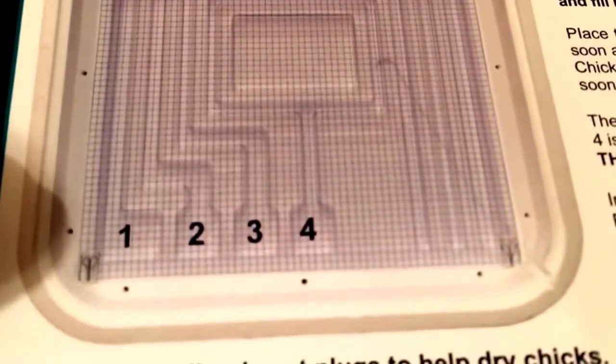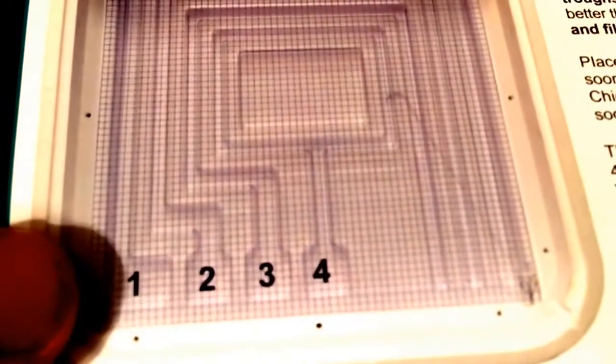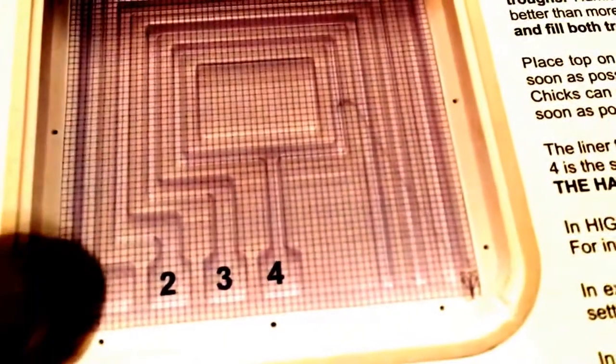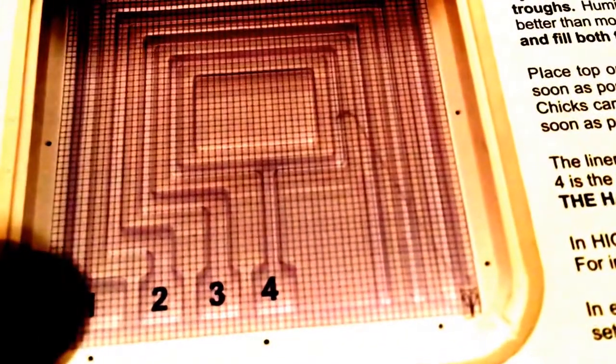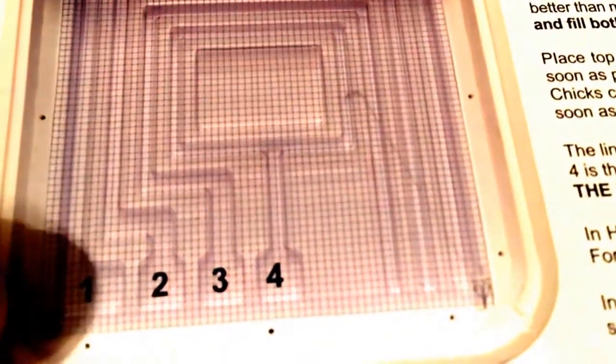However, it says for the bulk majority of the incubating time, you're only going to use tray one until right at the very end. Then you'll fill tray one and two because the last couple days you want to up the humidity.